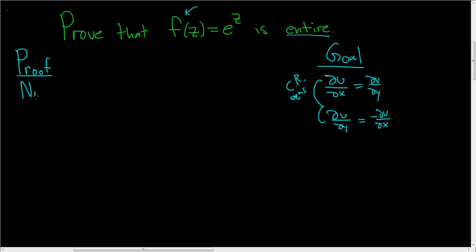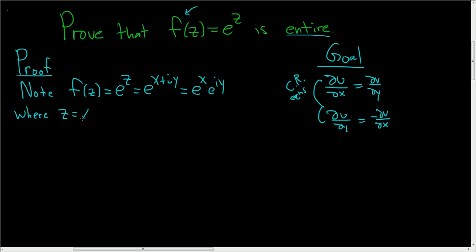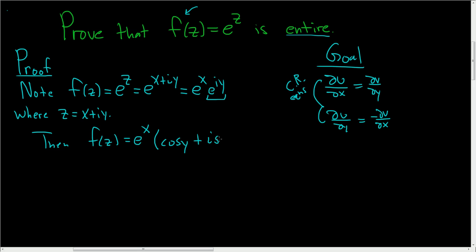So first we have to rewrite our function. Note we can rewrite f(z) as follows. f(z) = e^z, and z we can write as x + iy, and using properties of exponents we can write this as e^x · e^(iy), where z = x + iy. We can use Euler's identity to write this as e^x(cos y + i sin y). And then distributing the e^x, we end up with e^x cos y + i·e^x sin y.